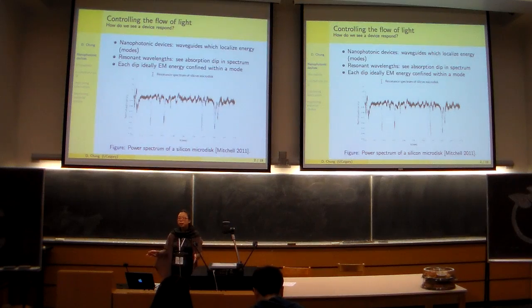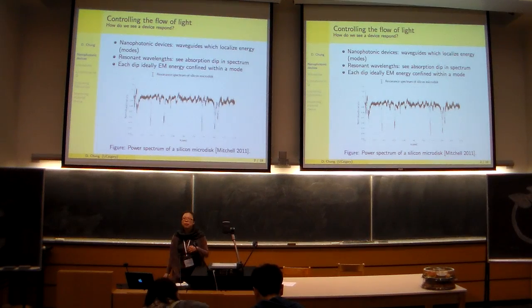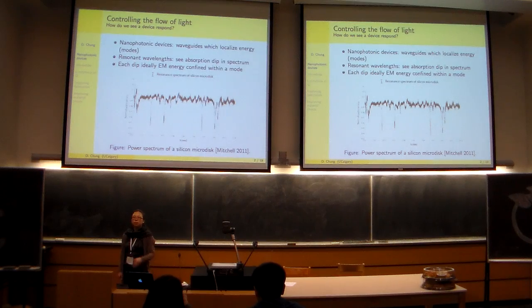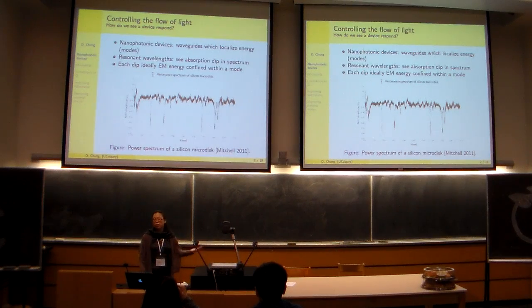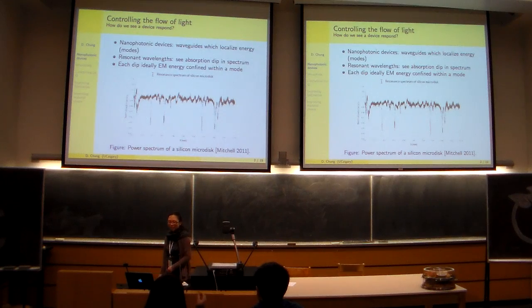So nanophotonic devices are waveguides that localize electromagnetic energy into optical resonances or modes. And if you've been following the Nobel Prize this year in physics, it was given for confining a single photon inside an optical cavity. And nanophotonic devices are optical cavities.